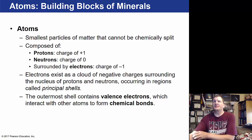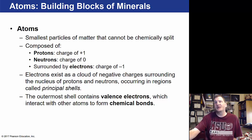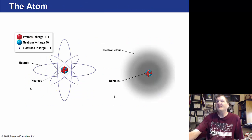What makes up the minerals themselves is atoms — the smallest particles of matter that cannot be chemically split. They consist of a proton with a positive charge, a neutron with a neutral charge, and electrons with a negative charge that surround the nucleus. The protons and neutrons gather in the middle in the nucleus, and electrons form a cloud around them.